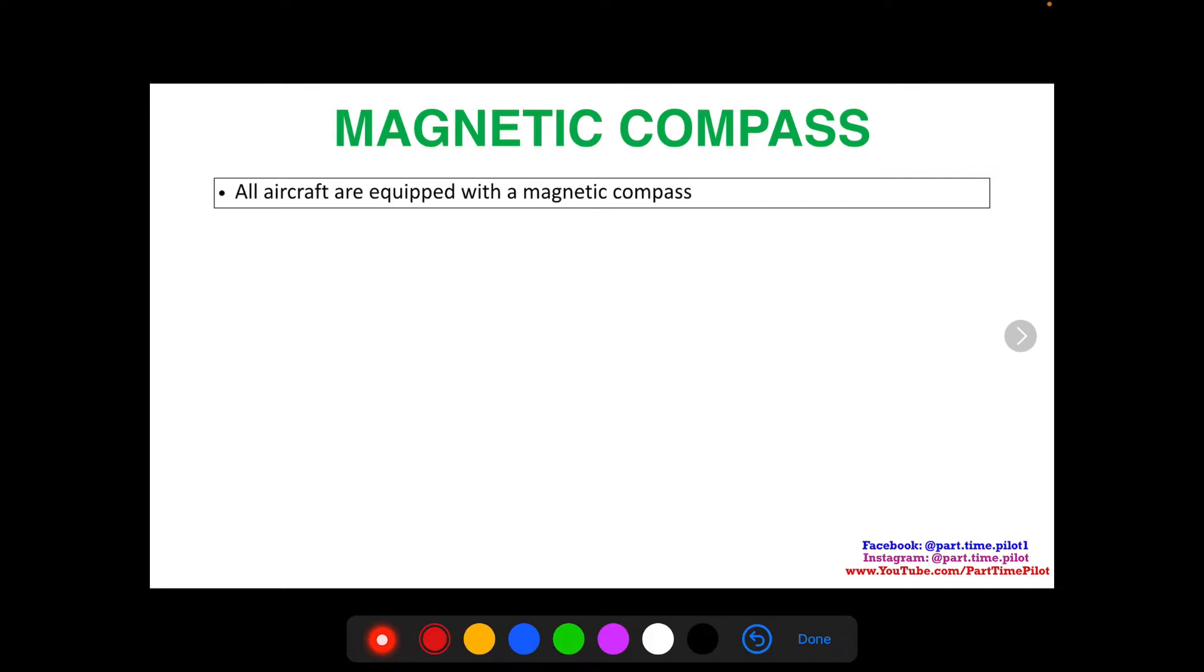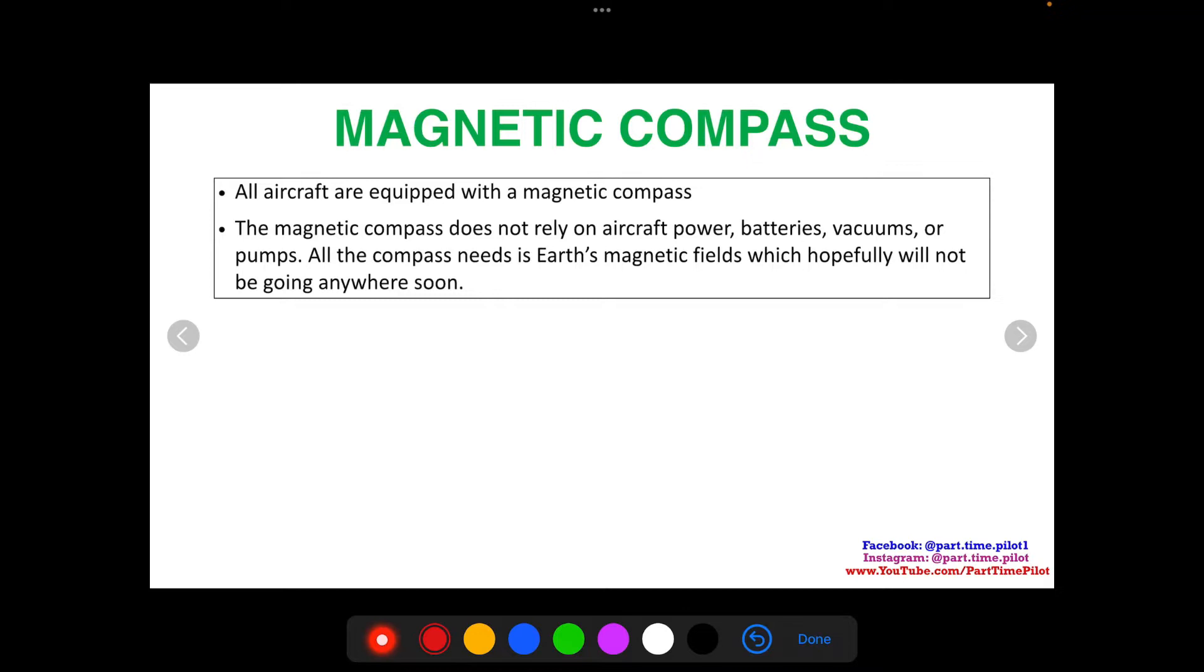All aircraft are equipped with magnetic compasses. The magnetic compass does not rely on aircraft power, batteries, vacuums, or pumps. All the compass needs is Earth's magnetic fields, which hopefully aren't going to be going anywhere soon.